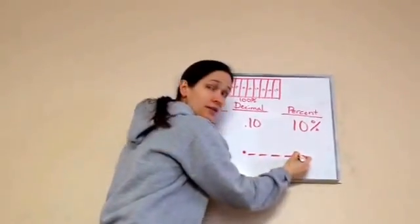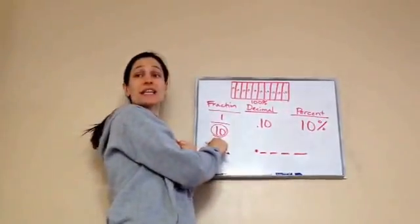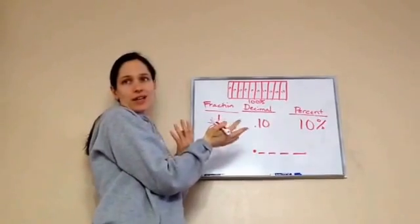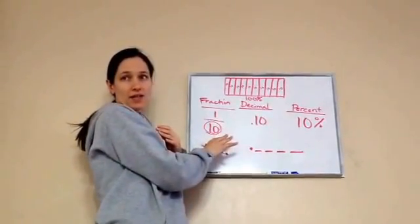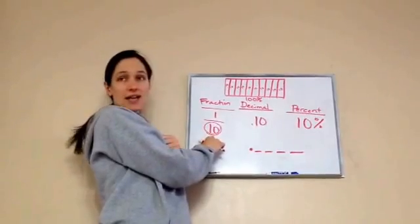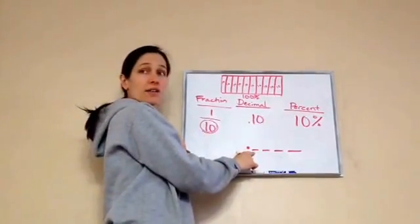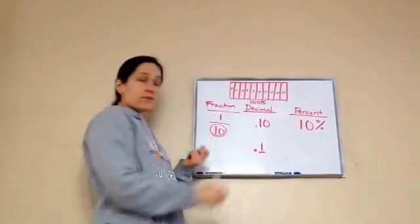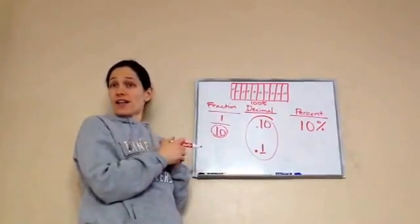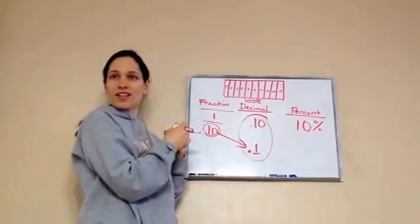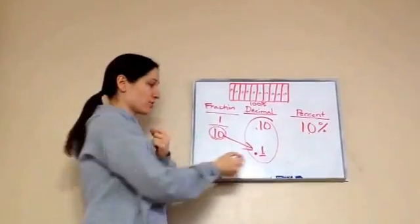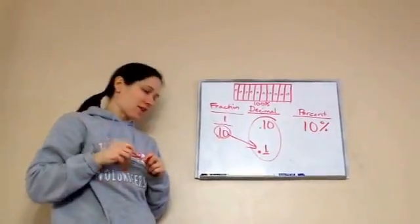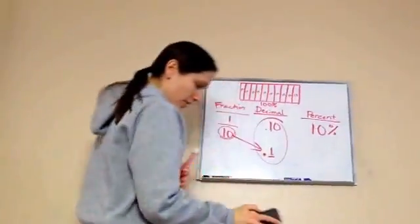Think about decimal place values: tenths, hundredths, thousandths, ten-thousandths. Because there's a ten on the bottom it fits the tenths place, and the number in the tenths spot is one — so you get 0.1. Then you can take that decimal and move it two places to make it a percent. Those are different ways you can approach the problem.